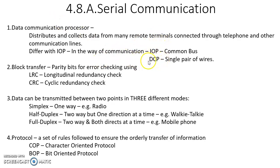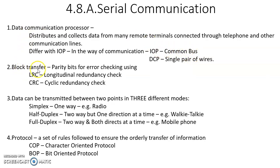The data communication processor uses a single pair of wires, whereas the input-output processor uses a common bus — a bunch of lines. Now, when a block of data is being transferred, many parity bits are generated for the purpose of error checking.